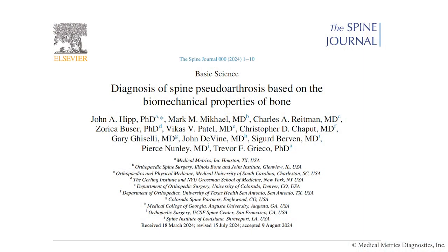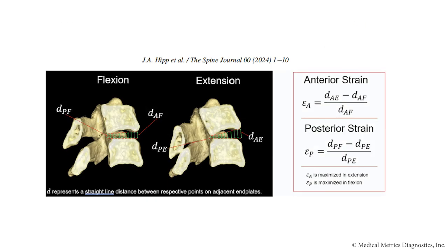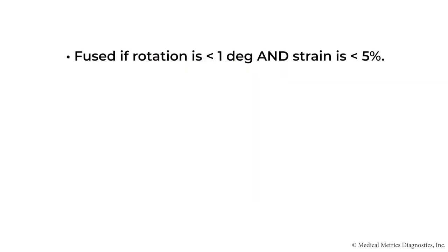The strain in flexion or extension is presented for the first time in this manuscript. You can see the measurement diagram and associated formula used to calculate strain in any given position. The protocol depends on the maximum strain measured. A level may be classified as fused if rotation is less than one degree and strain is less than five percent.